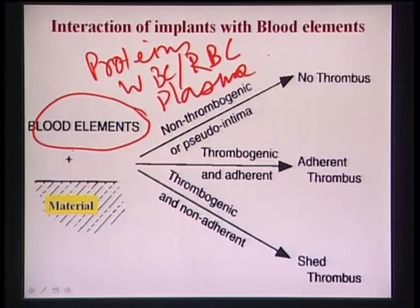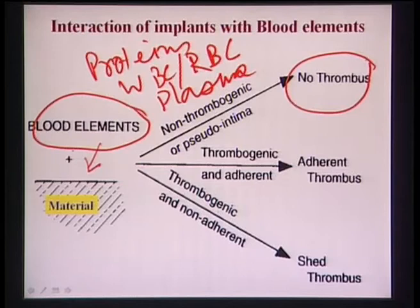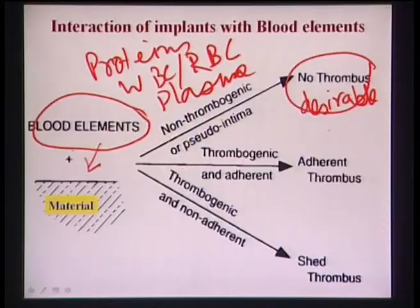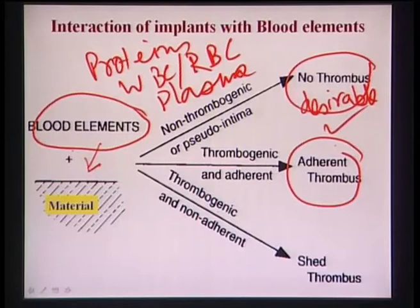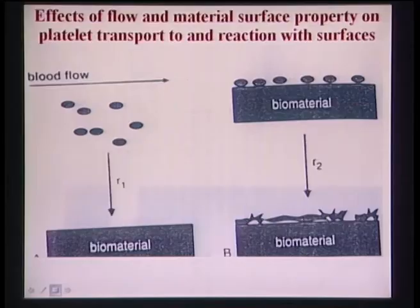Non-thrombogenic means no blood clotting or coagulation occurs - highly desirable. Thrombogenic and adherent means thrombus forms and adheres to the biomaterial surface. Thrombogenic and non-adherent means thrombus forms, but as blood continuously flows in dynamic conditions, subsequent blood flow takes away the thrombus. These represent the effects of blood flow on material surface properties and platelet transport and reaction with surfaces.